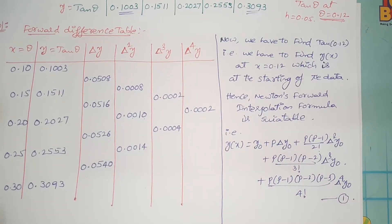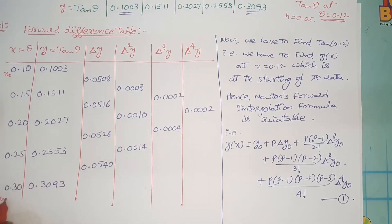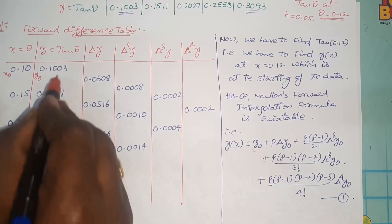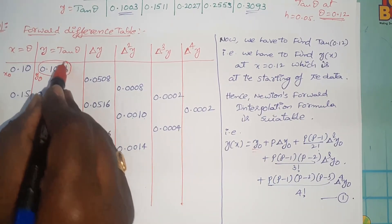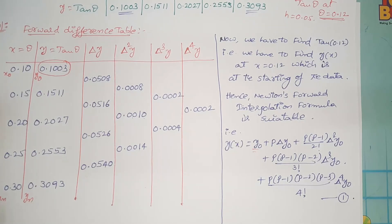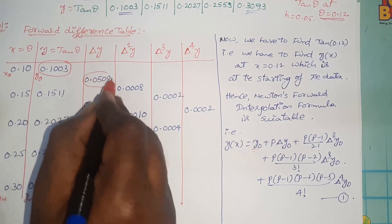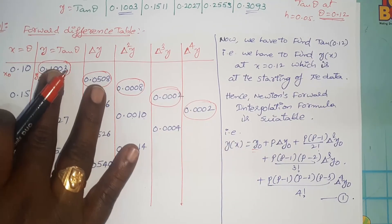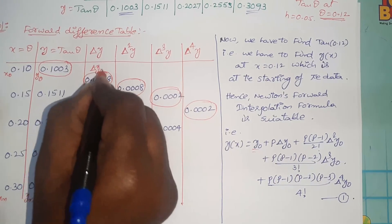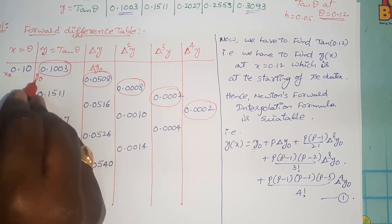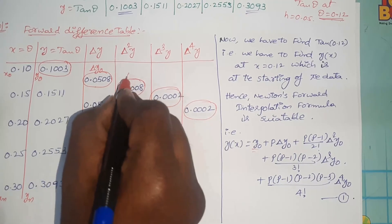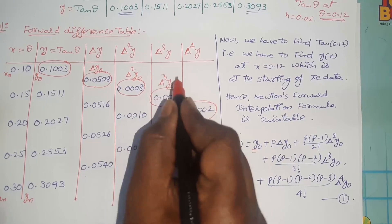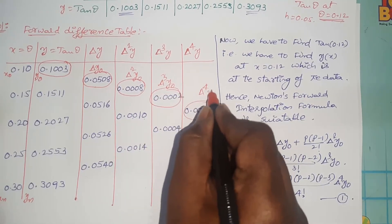Here x0 is the first x value and y0 = 0.1003. When applying Newton's forward interpolation formula, use the first corner values in the difference table. So delta y0 = 0.0508, delta squared y0 = 0.0008, delta cubed y0 = 0.0002, and delta to the fourth power y0 = 0.0002.